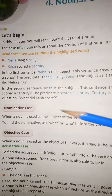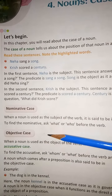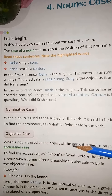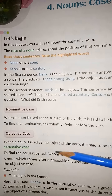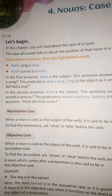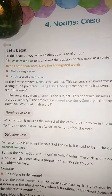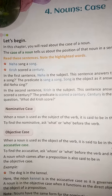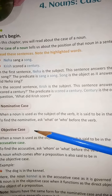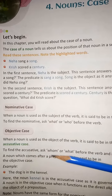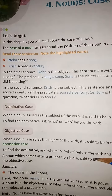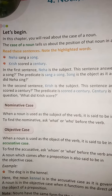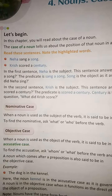Second is the accusative or objective case — when a noun is used as the object of a verb, it is said to be in the accusative case. To find the accusative, ask 'whom' or 'what' before the verb and its object.